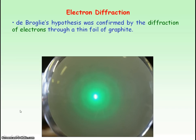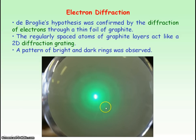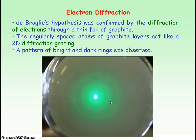De Broglie's hypothesis was confirmed by the diffraction of electrons through a thin foil of graphite. Diffraction is a wave property. The regularly spaced atoms of the graphite layers acted like a 2D diffraction grating, and so a pattern of bright and dark rings were observed — showing the spreading out, or diffraction, of the electrons as they pass through the gaps between the graphite atoms.